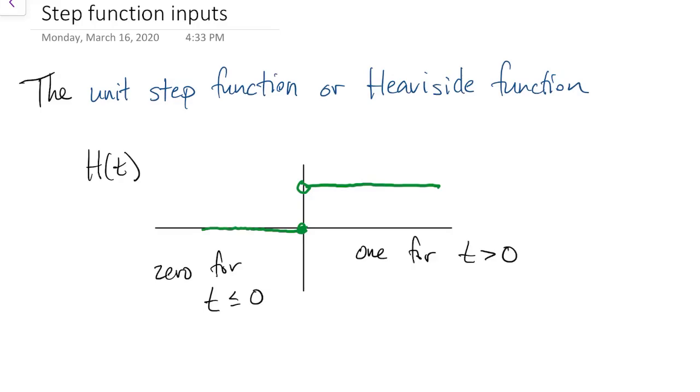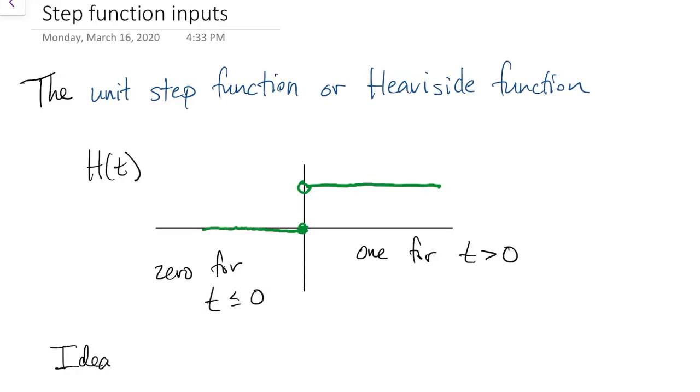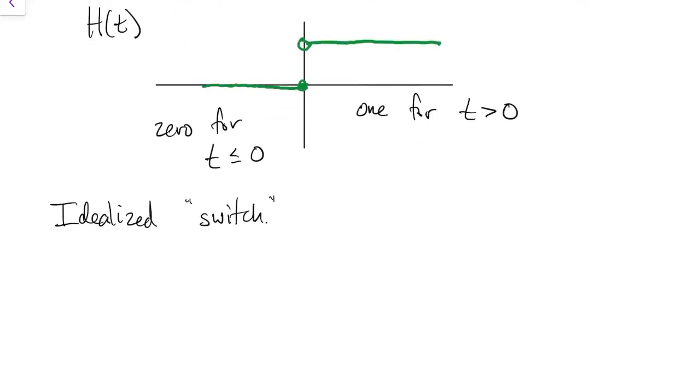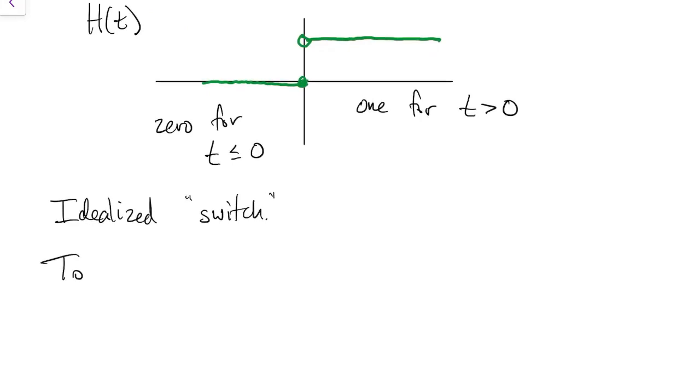The idea behind a step function is that it represents a switch. If you wanted to switch on at a time other than 0, let's say at capital T, then you would just use H of T minus capital T. So that's 0 before the switch and 1 after the switch.